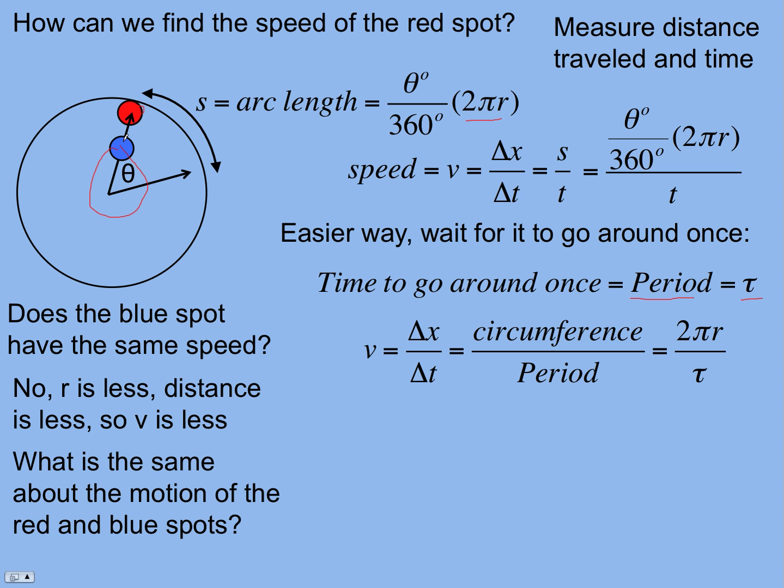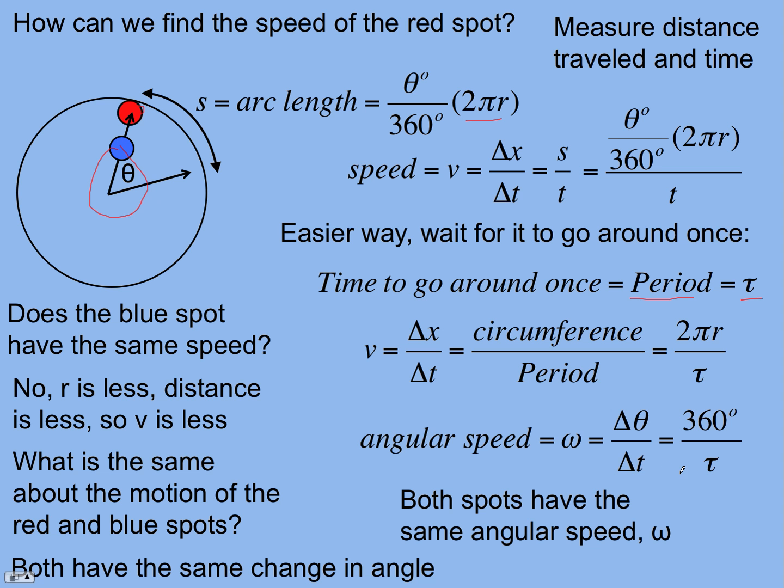But there is something that's the same about the motion of both spots in any spot on this object. They have the same period, and they also have the same change in angle. So we're going to define a new kind of speed called angular speed, which is the change in angle over the change in time. If it went around once, the change in angle would be 360 degrees, and the time would be the period. The advantage of angular speed is that both spots have the same angular speed.